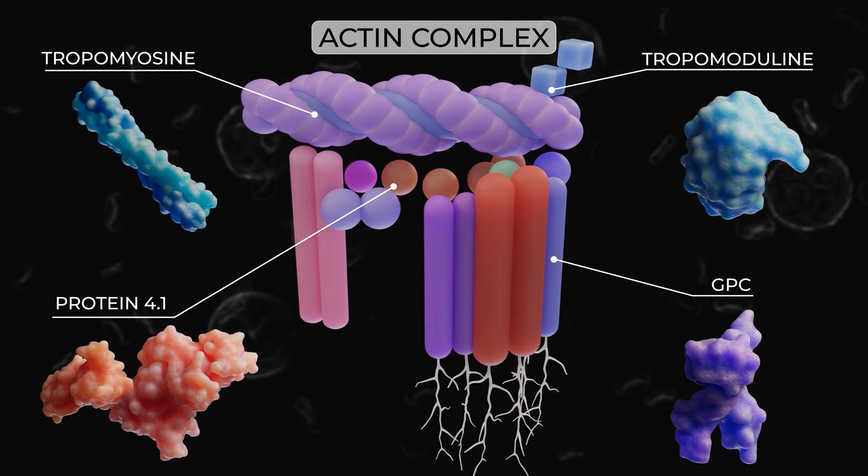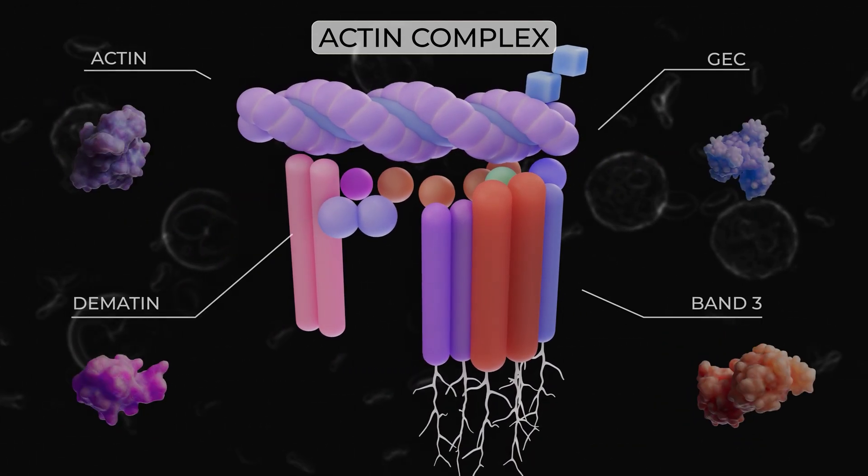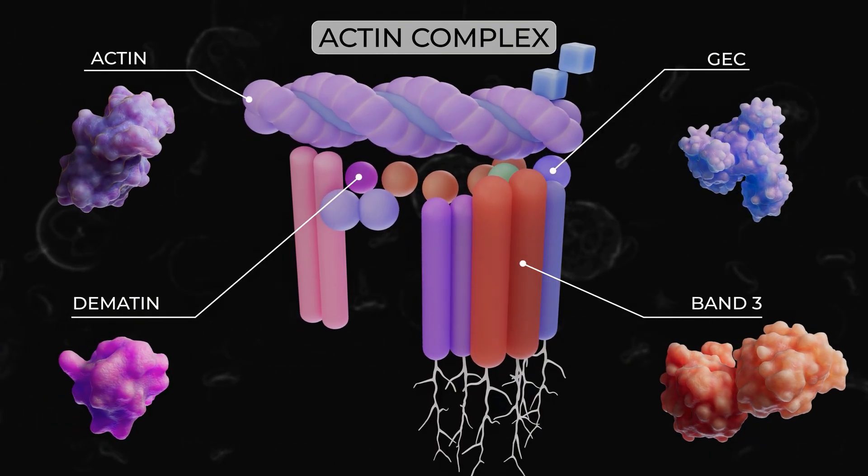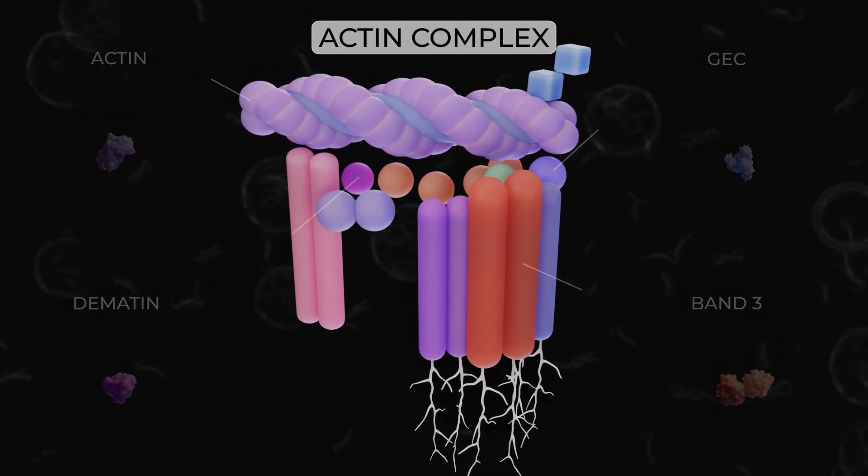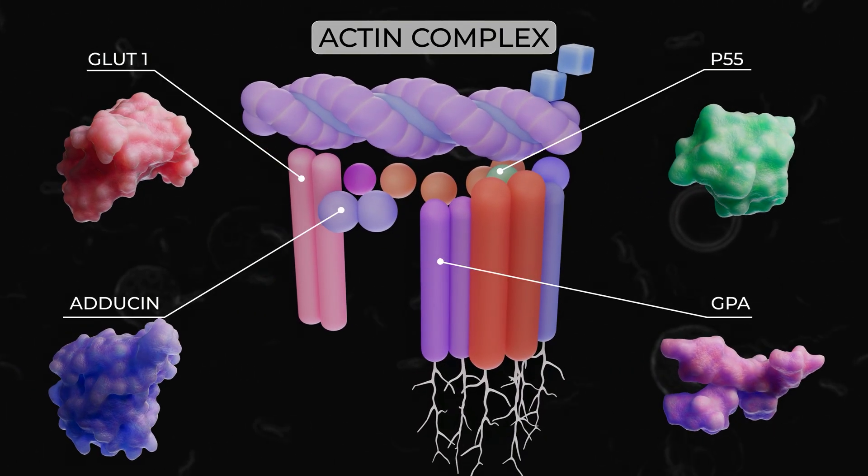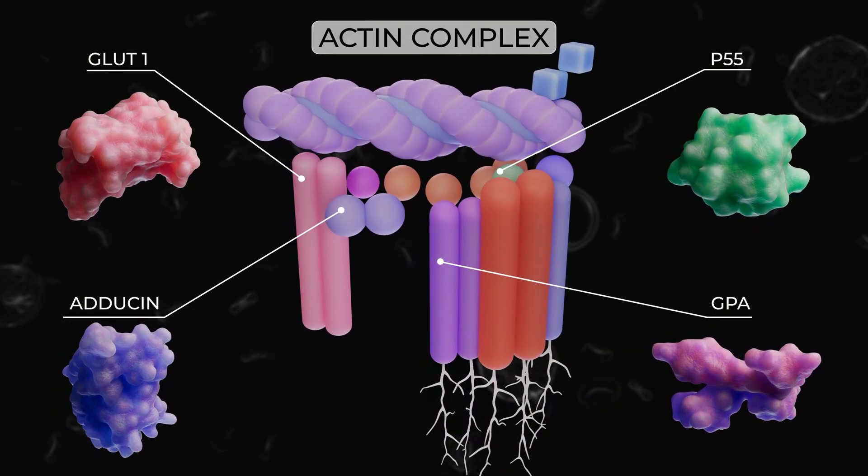These are multi-protein structures made up of tropomyosin, protein 4.1, actin, the GC complex, demidin, band 3, glycoforms, GLUT1, aducin, and p55.